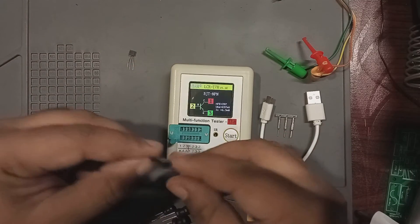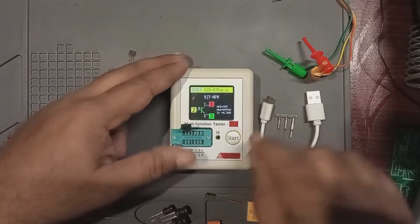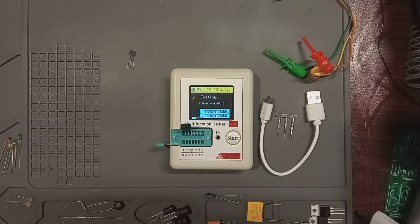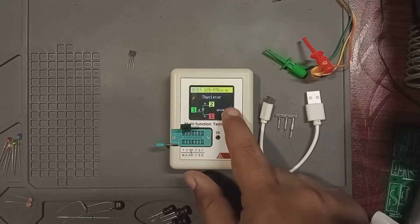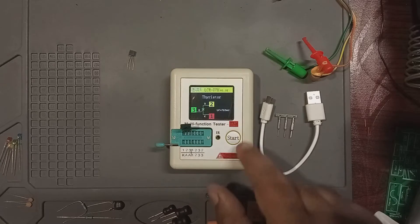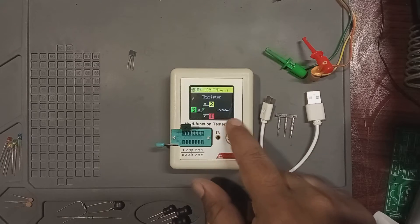Next, let's test an SCR or thyristor. Once connected, and we give it a moment, it identifies the component as a thyristor. It shows the anode, cathode and gate pins with a forward voltage reading of 761 millivolts.